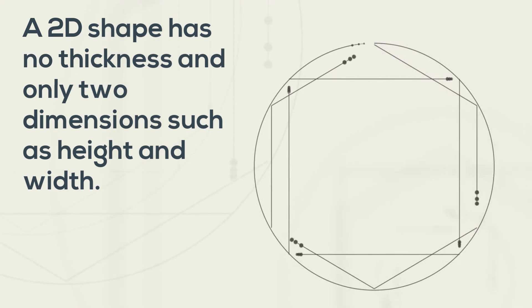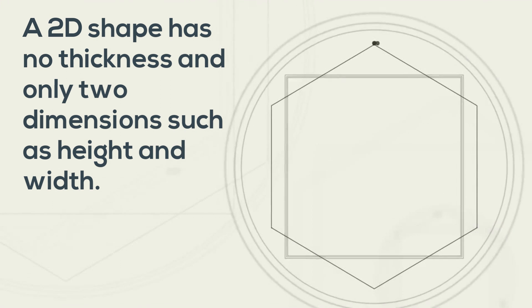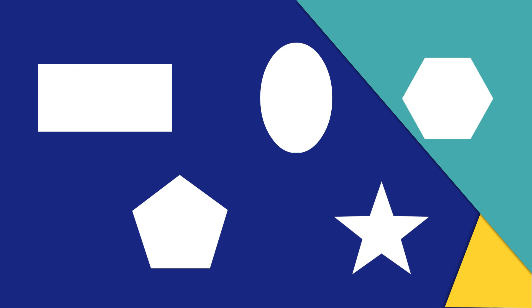A 2D shape has no thickness and only two dimensions such as height and width. Each of these shapes would be a two dimensional shape. Notice that they can have straight lines or curved lines.